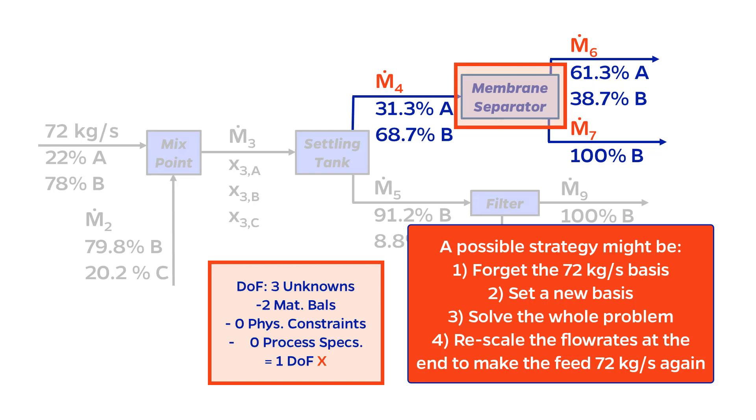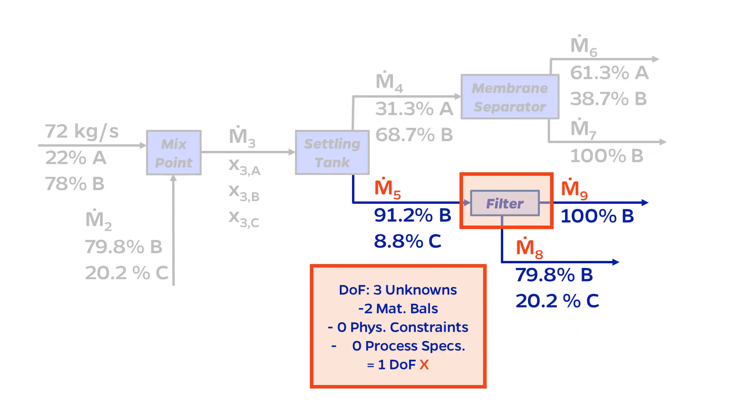Instead, I'll press on with trying individual units. Unfortunately, the filter fizzles out pretty quickly as well. At this point, we've tried all the individual process units and have struck out so far. But all hope is not lost yet. We can try to combine process units too.